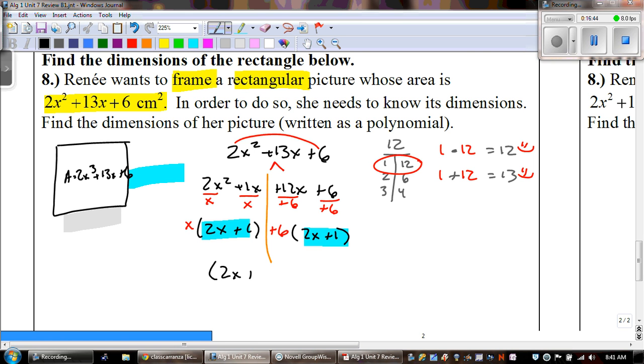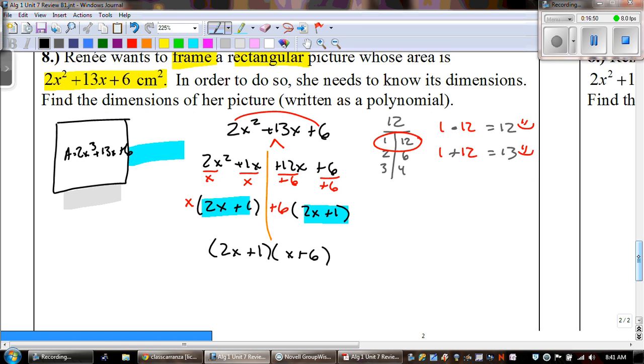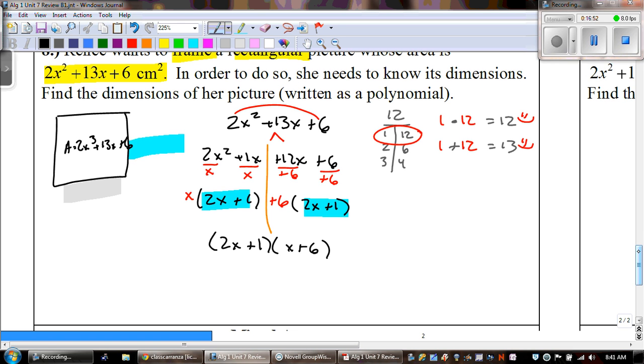So, our answer would be 2x plus 1 times x plus 6. Now, the only thing is they wanted the dimensions. So, the only thing that would be different about our answer here is we would write that the dimensions are 2x plus 1 centimeters by x plus 6 centimeters. And that's our final answer.